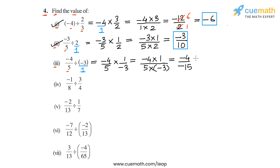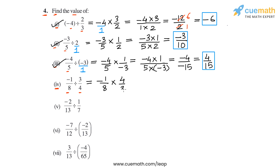We get minus 4 over minus 15. Dividing above and below by minus 1, we get 4/15. So in part 3, the value of the expression is 4/15. In part 4, we have to calculate minus 1/8 divided by 3/4. We write this as minus 1/8 multiplied by the reciprocal of 3/4, which is 4/3. Multiplying numerators and denominators gives minus 4 over 24.